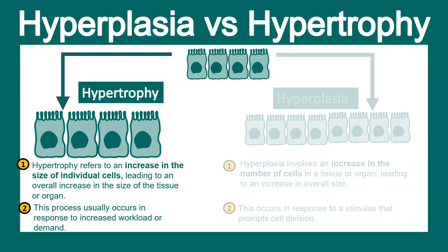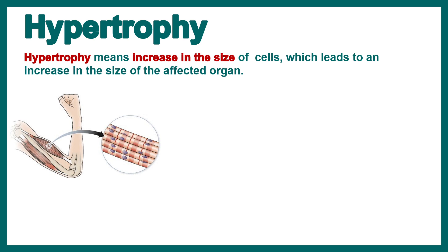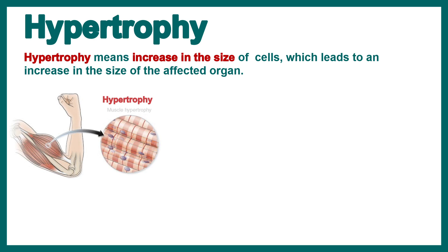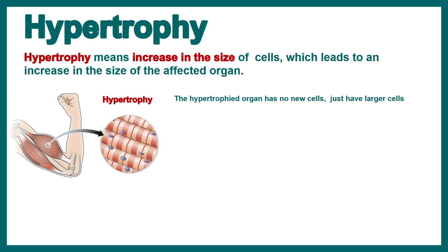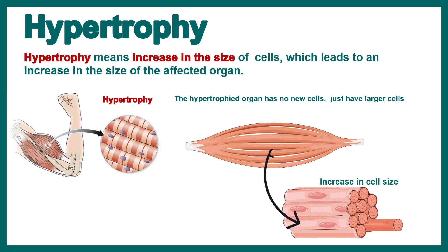Now let's talk about hypertrophy. Hypertrophy is an increase in the size of the organ or tissue, meaning no increase in cell number but an increase in size. One of the best examples is muscle hypertrophy, where all the cells in the muscle are bigger and larger in size.